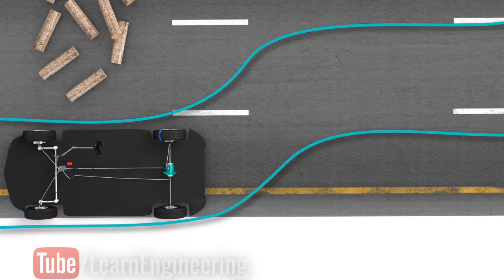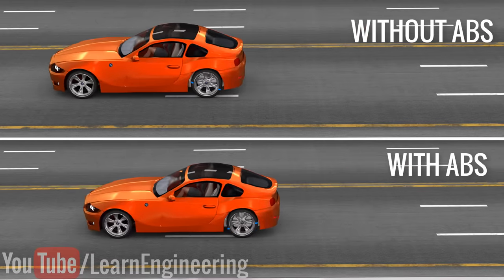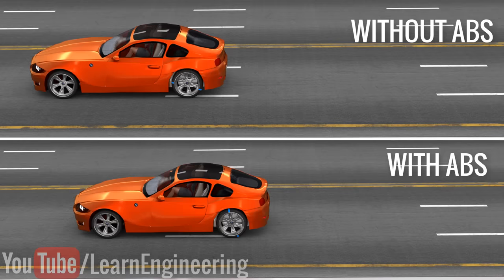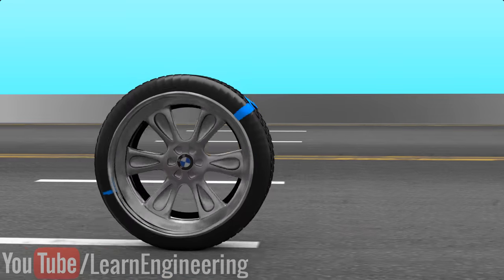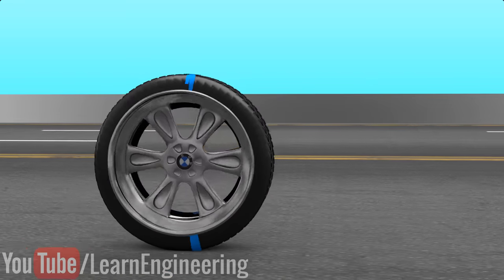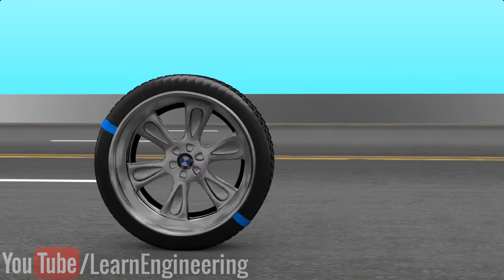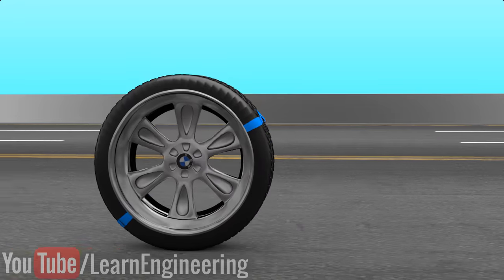But, the big question here is, how does the action of intermittently releasing the brakes reduce the braking distance? To get an answer to this question, we first need to understand how the coefficient of friction between a tire and the road varies with respect to slip.